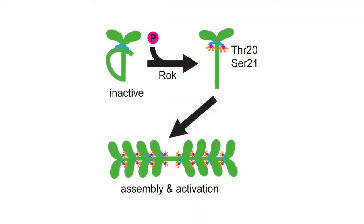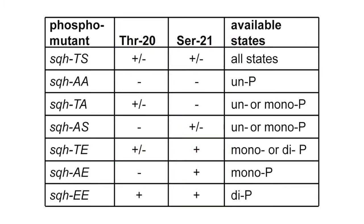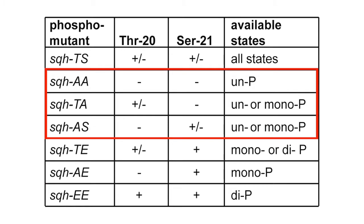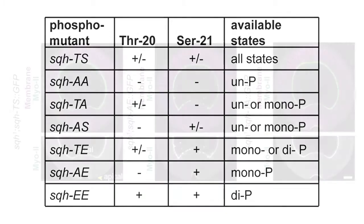To uncouple myosin from its upstream regulators, Vasquez et al. generated GFP-tagged versions of the regulatory light chain spaghetti squash, in which two key residues targeted by Rho kinase — threonine-20 and serine-21 — were replaced by either phosphomimetic glutamate residues or non-phosphorylatable alanine residues.